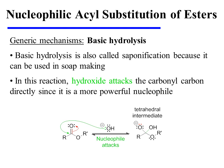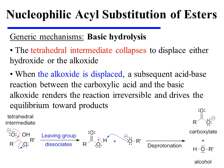Basic hydrolysis of an ester is also called saponification because this reaction plays a role in the making of soap. In this process, hydroxide directly attacks the carbonyl carbon since it is a more powerful nucleophile. As the pi electrons are pushed onto oxygen, a tetrahedral intermediate is formed. This tetrahedral intermediate collapses to displace either hydroxide or the alkoxide. When the alkoxide is displaced, a subsequent acid-base reaction between the carboxylic acid and the basic alkoxide renders the reaction irreversible and drives the equilibrium toward products.